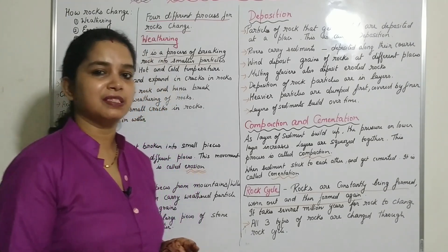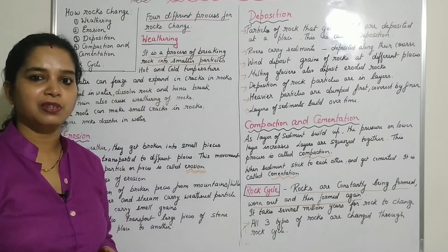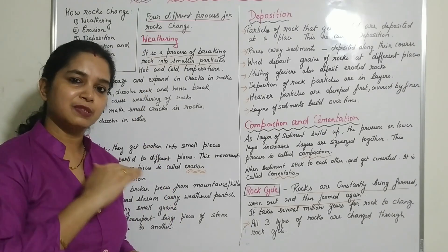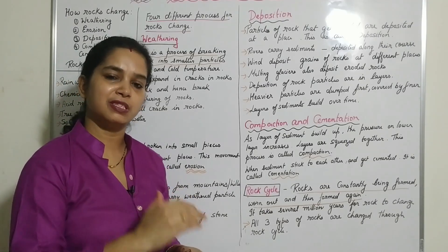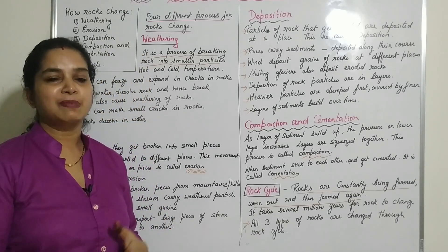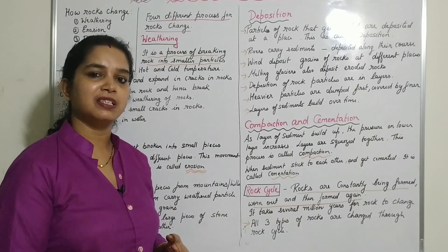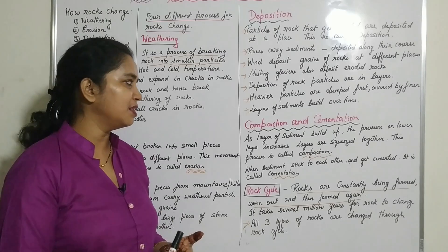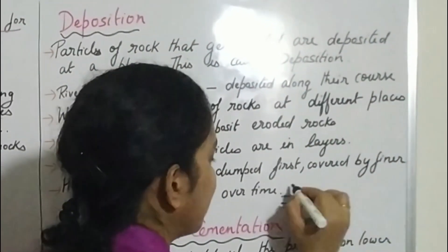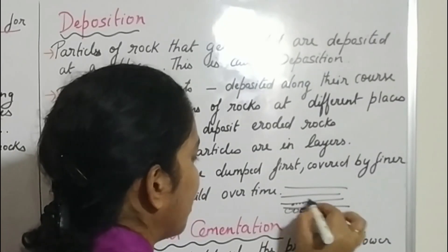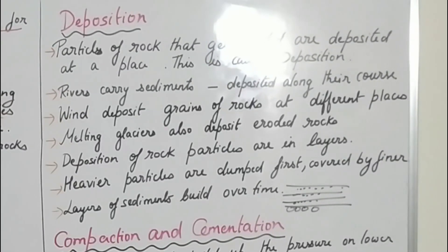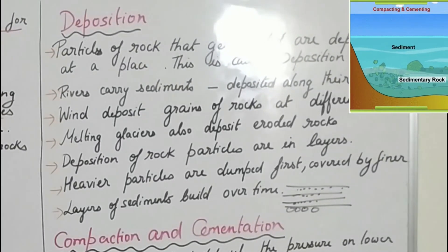Melting glaciers also deposit eroded rocks. The deposition happens layer by layer: first the bigger particles are deposited at the bottom, then smaller particles, then finer particles on top. So the lower layers consist of bigger particles, and the upper layers consist of finer and finest particles. This layered settling is called the deposition of rock particles.